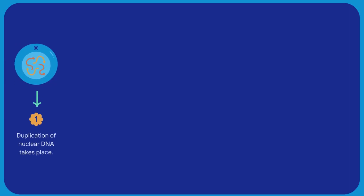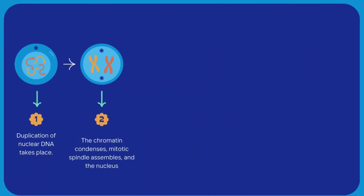Mitosis includes five steps. In the first step, the duplication of nuclear DNA takes place and forms its replica. In the next step, the chromatin material condenses, mitotic spindle fiber formation takes place, and the nucleus structure disappears.